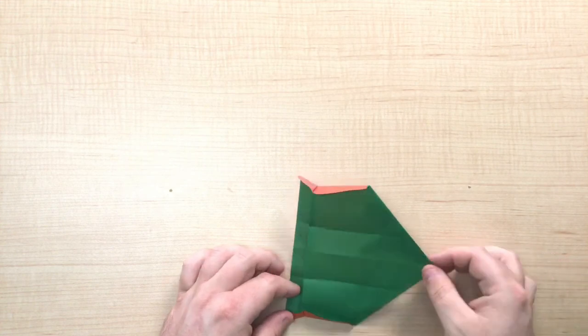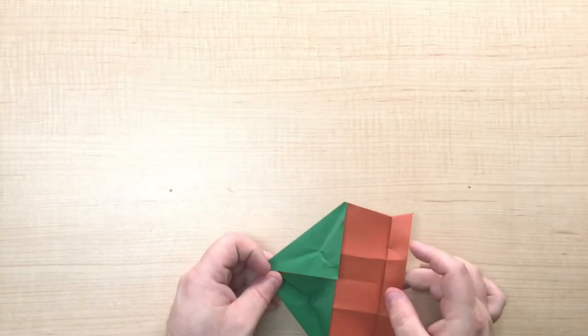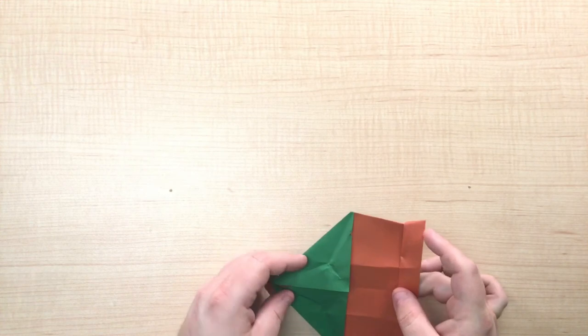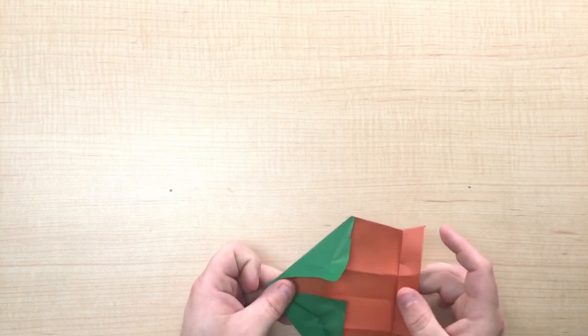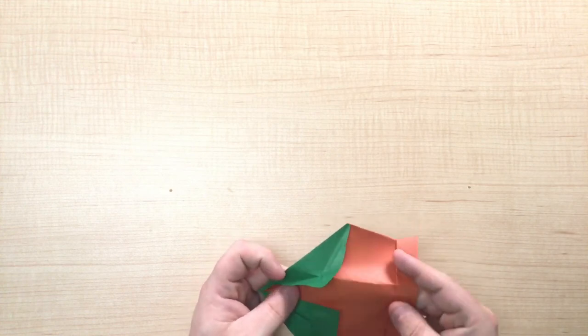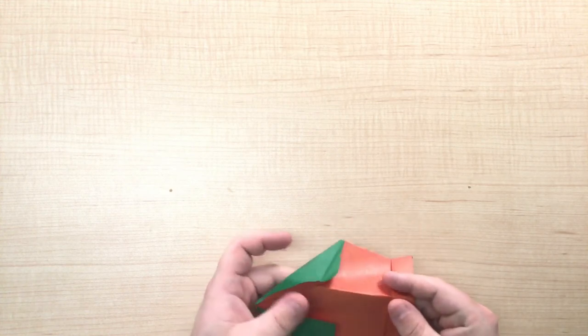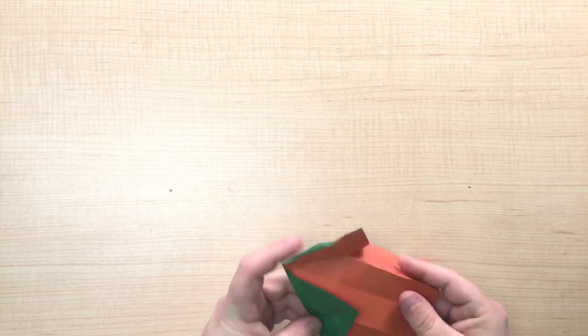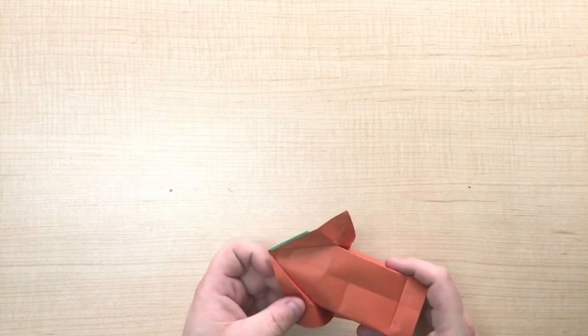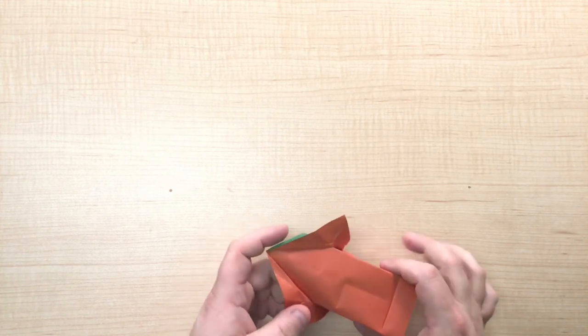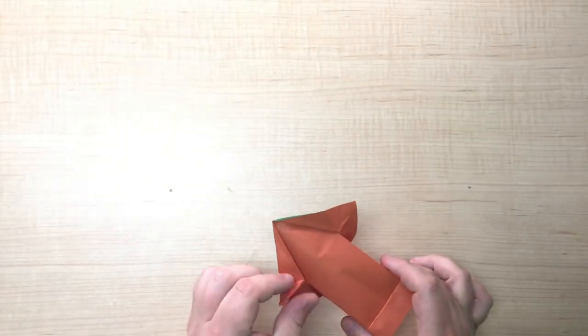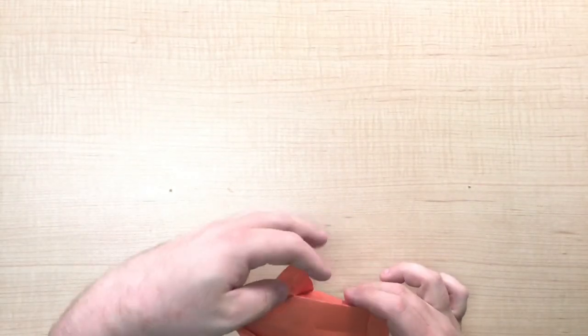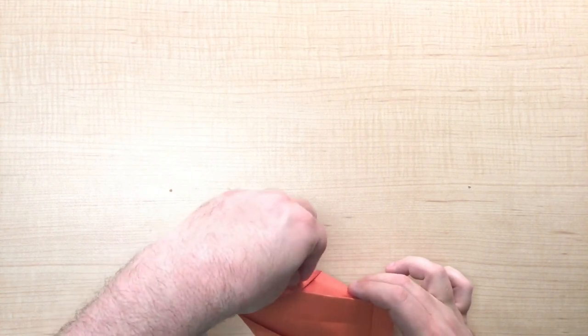Fold your origami back over and now we want to further define the shape. So bring the legs in on both sides. And then pinch the horns again so that they go back to their regular shape.